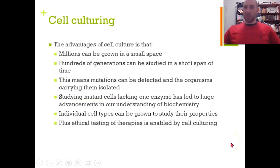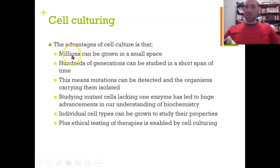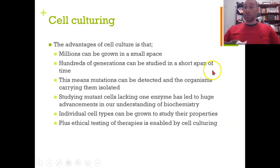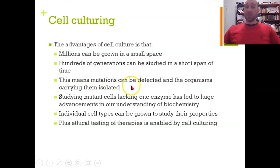So what is cell culture? Cell culturing is growing cells specifically for a use. The advantage is that you can make millions of cells in a very small space, and hundreds of generations in a very short amount of time since cells reproduce pretty quickly. You can detect mutations and the organisms carrying them are isolated, so you can do a lot of experiments on mutating cells using cell culture techniques.